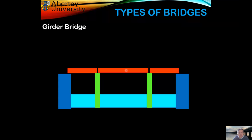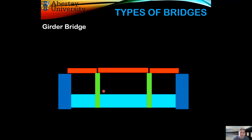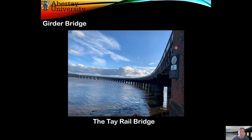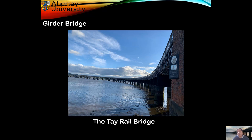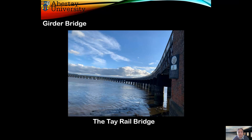Girder bridges are very common. In this case you'll have piers and the decking all over them. You might have seen these if you've visited Dundee — crossing the Tay Rail Bridge or the Tay Road Bridge. Both are examples of girder bridges.